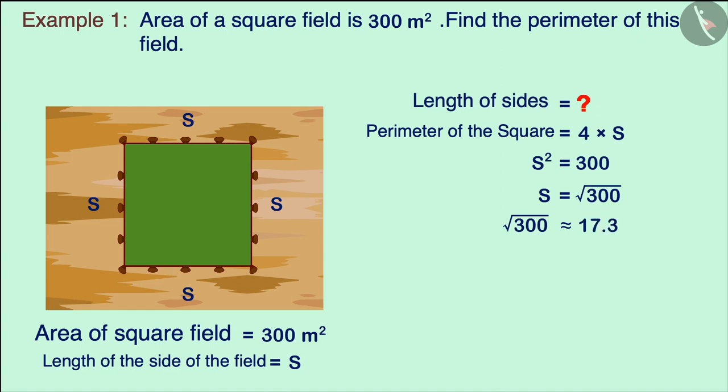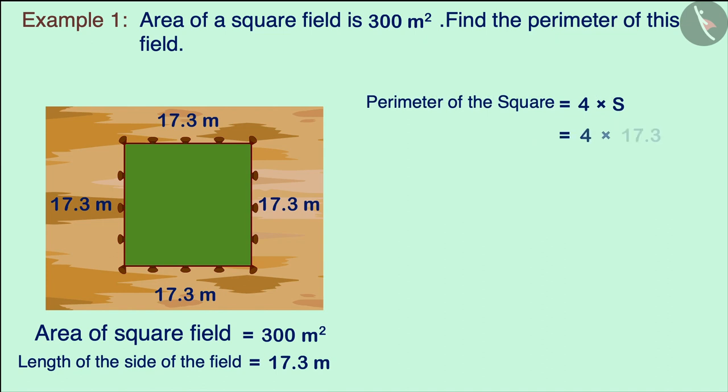Therefore, the length of one side of the square field will be about 17.3 meters, which will give us the perimeter of the field to be around 69.2 meters.